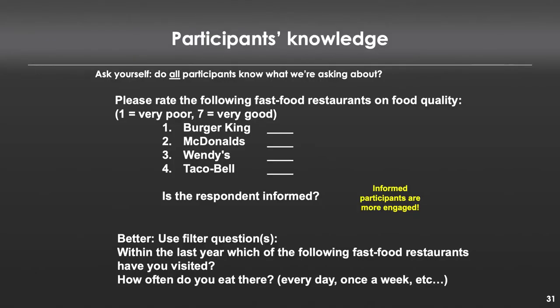There are ways to deal with this — for instance, using filter questions. Ask people, 'Have you ever been to Burger King?' If they have, follow up by asking how much they enjoyed it. If they haven't, they don't answer the next question. These filter questions allow you to screen out people from subsequent questions that require knowledge gleaned from actually visiting one of those restaurants.